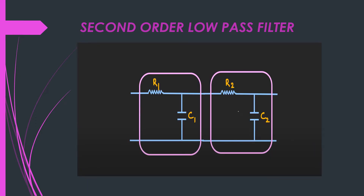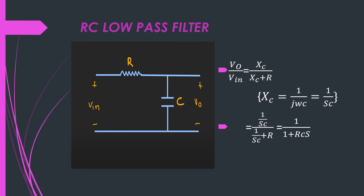By cascading two first order low pass filters we can get the 2nd order low pass filter. For the first order filter, output divided by input can be given by Xc divided by Xc plus R. Here Xc is 1 divided by j·omega·C, and if we represent Xc in the s-plane where j·omega equals s, then we can write Xc as 1 divided by sC. So we can write this expression as 1 over sC divided by (1/sC + R), or simply as 1 divided by (1 + RCs).